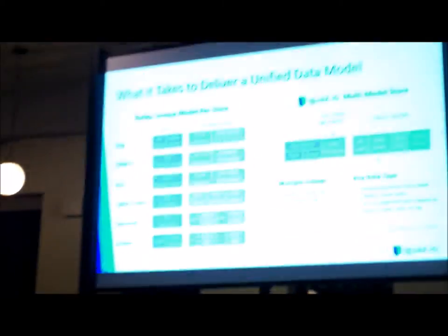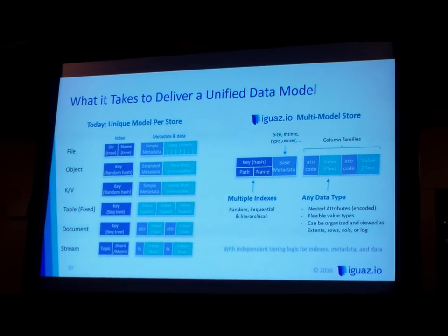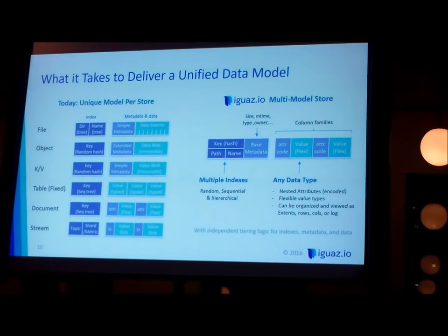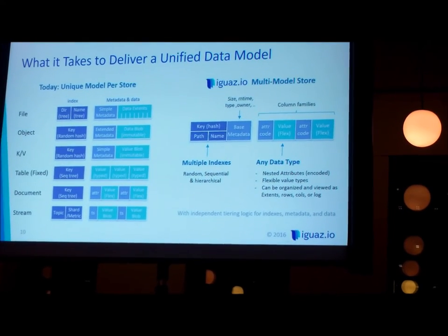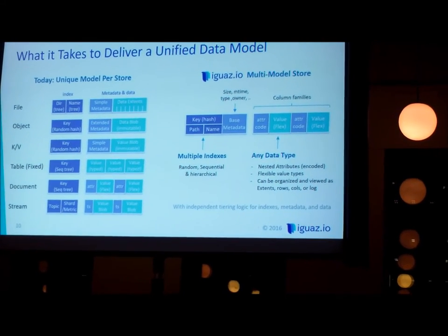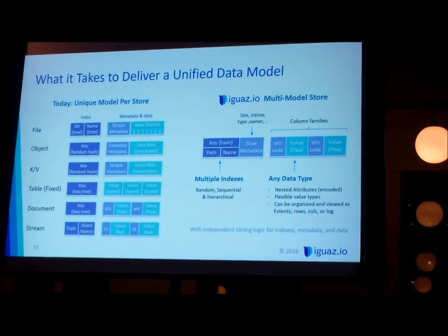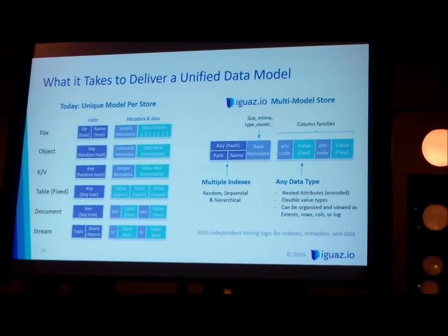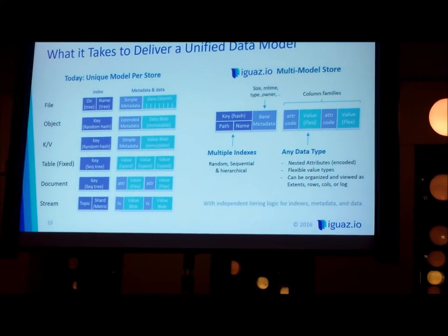The interesting thing is they all fit into the same thing — you could write a streaming Kafka message and read it via a Kinesis API, because it all goes into the same database. The way we achieved this: all those different types of data have different organization and indexing methods. If I'm thinking about a file, my index is the directory name and the metadata is simple. If I'm working on a database with fixed-structure columns, the index is the key. We said: why can't we normalize all of that into one data model?